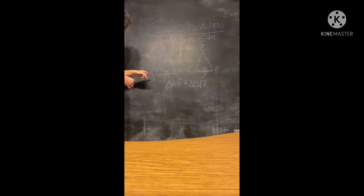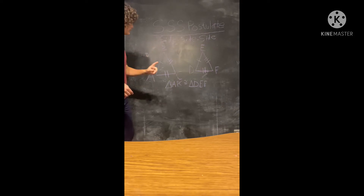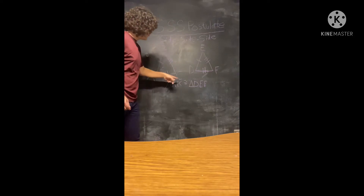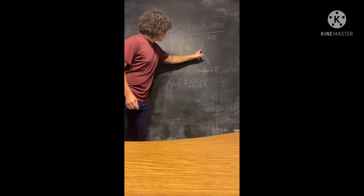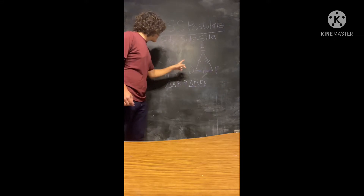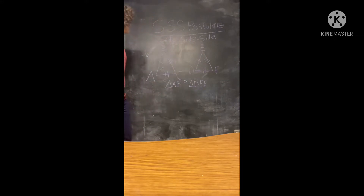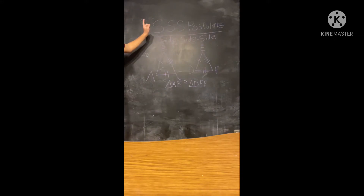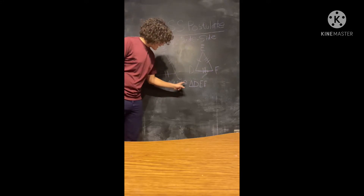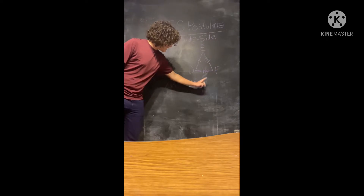What that looks like in practice is: segment A-B is congruent to segment D-E, segment B-C is congruent to segment E-F, and finally segment A-C is congruent to segment D-F, which, using the S-S-S postulate, tells us that triangle A-B-C is in fact congruent to triangle D-E-F.